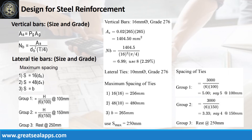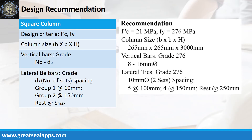Follow the given computations for lateral ties. Design recommendation: fc' = 21MPa, fy = 276MPa, column size 265mm × 265mm × 3000mm, 8 pieces of 16mm vertical bars at grade 276, lateral ties 10mm at grade 276 — 2 sets spacing: 5 at 100mm, 4 at 150mm, rest at 250mm.